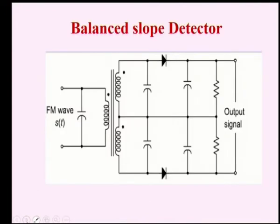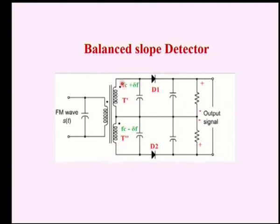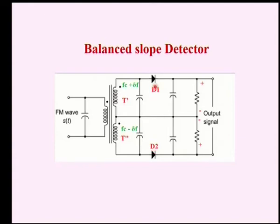Next we go to the balanced slope detector. This is the simple circuit that shows the balanced slope detector. It consists of two sections: a center-tapped transformer with a primary and secondary, and two tuned circuits. One is tuned to Fc plus ΔF and another is tuned to Fc minus ΔF. The upper part of the circuit is tuned to Fc plus ΔF and the lower part is tuned to Fc minus ΔF. There are two diodes and an output section.